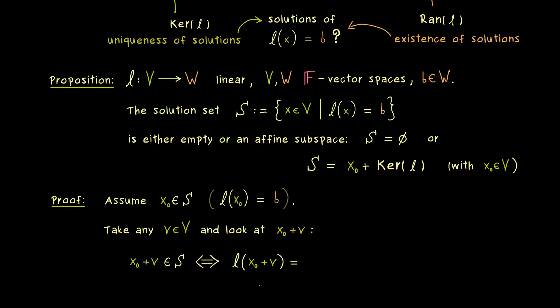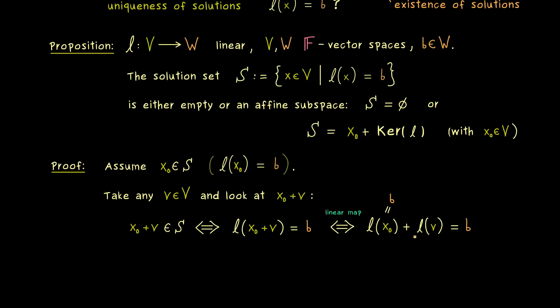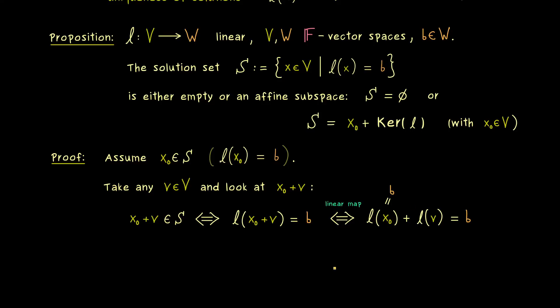It just means by applying l we get out b. But now you should see here on the left-hand side we can use the linearity of our map l. So we can just pull out the addition and we get l(x_0) + l(v). But now by assumption we already know that l(x_0) is already b. Hence we can subtract it on both sides and we get that l(v) is equal to the zero vector.